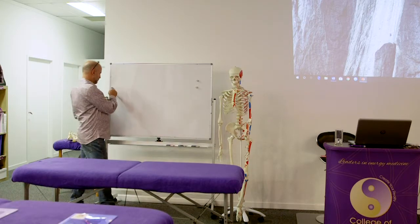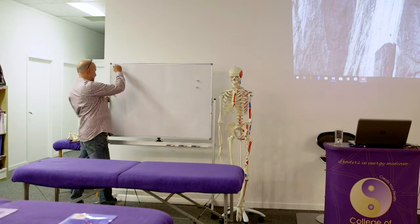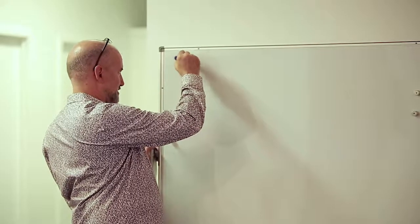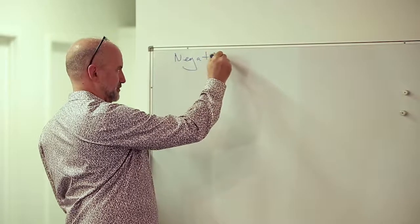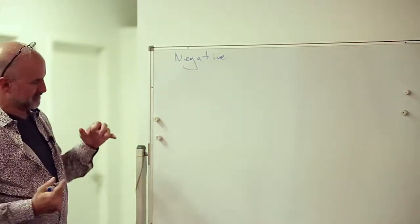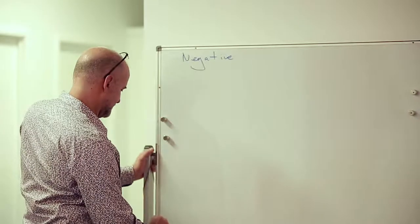And so with these two orders, Tiller calls one negative space-time, which is the spiritual, and the physical he calls positive space-time.